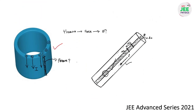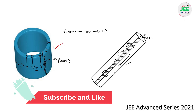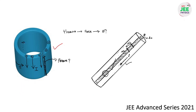I will give you one task before ending this video. When current flows along the curvature of an infinite cylinder — not along the length but along the circumference — what is the magnetic field inside and outside the cylinder? Please let me know your answer in the comment section, and according to your demand I will make a video on this also.